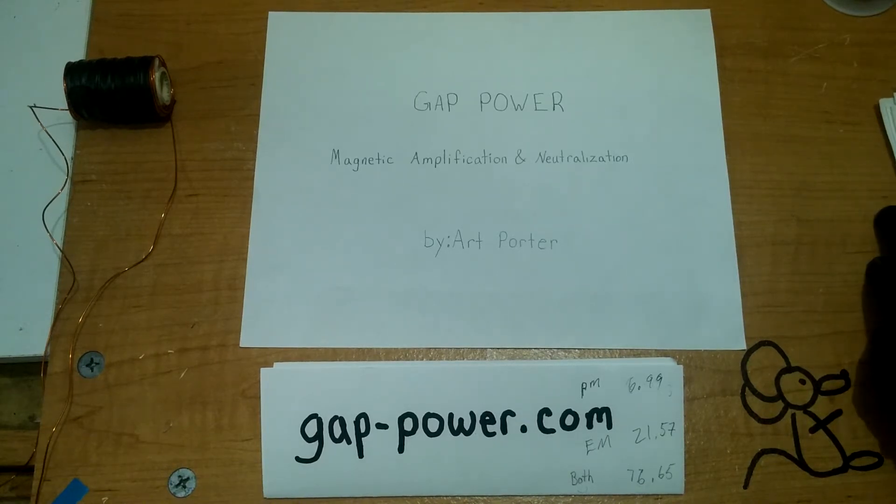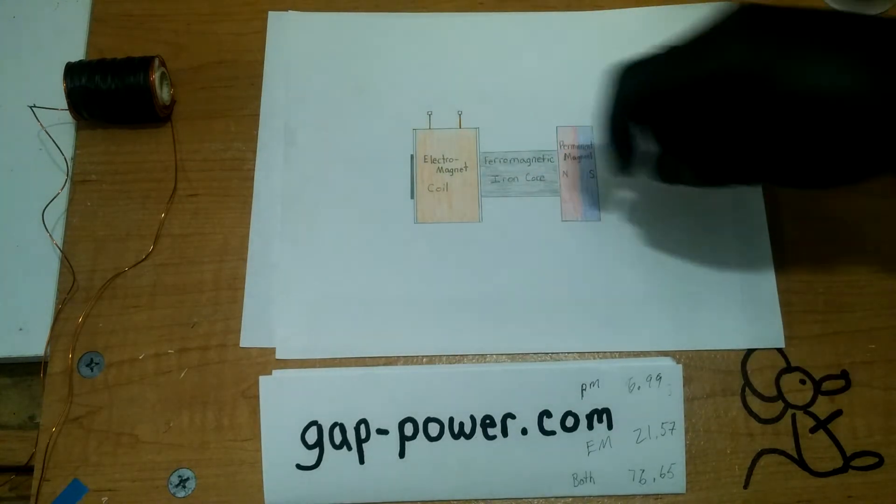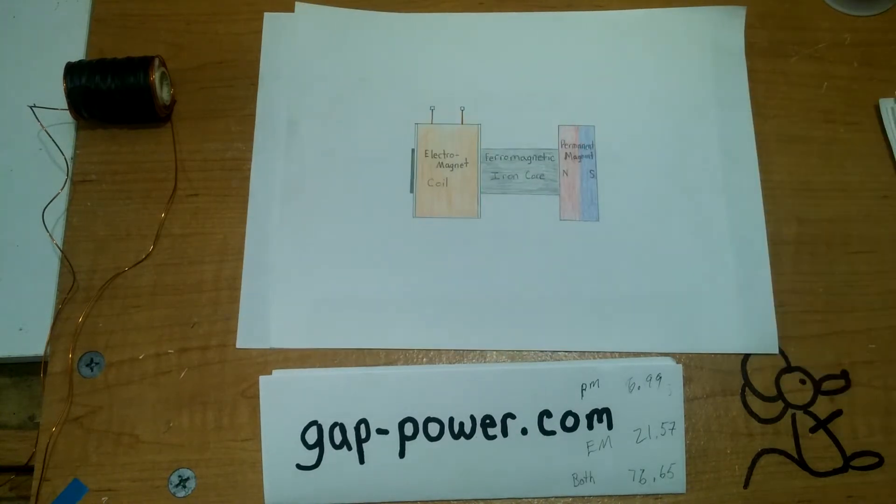Now, what you have is an electromagnetic coil coupled with a ferromagnetic core and a permanent magnet.